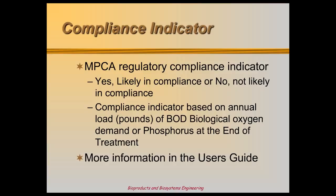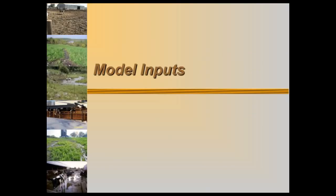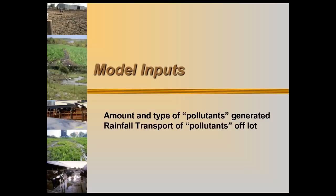We'll also look at more model outputs later on. So what exactly causes a feedlot to pollute? It starts with manure — the amount and type of waste that will run off the site during any given rainfall. A buffer downslope might help scrub pollutants out of the runoff, but that depends on the buffer's size, slope, soil type, and plant life.